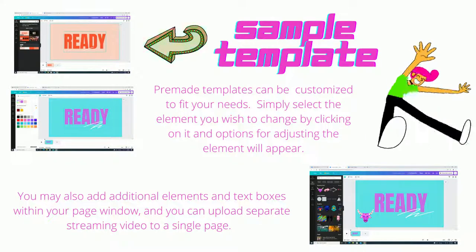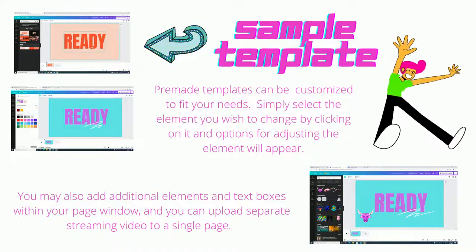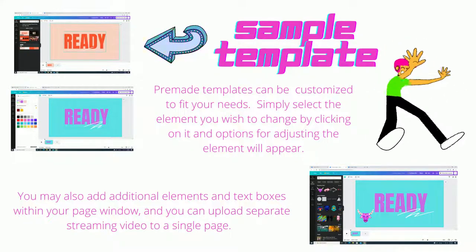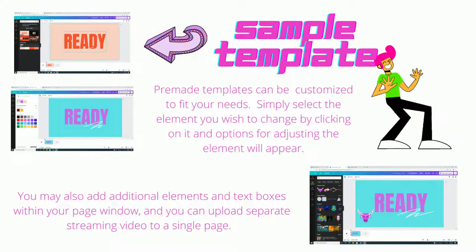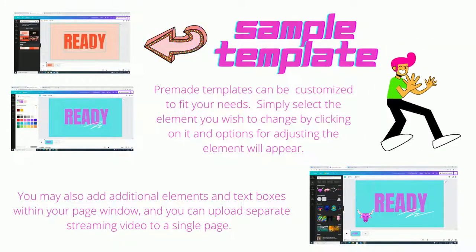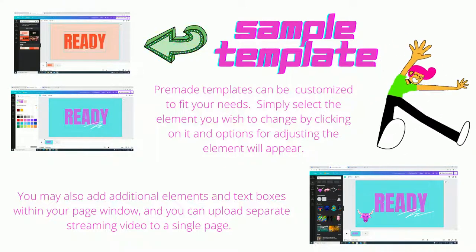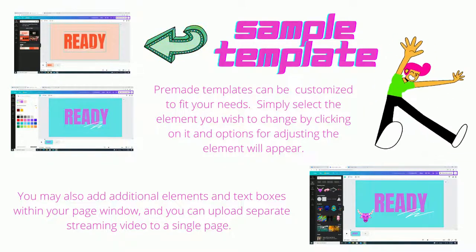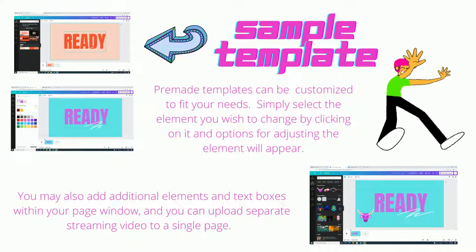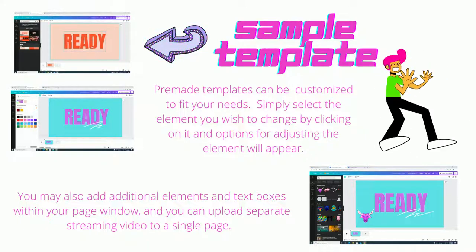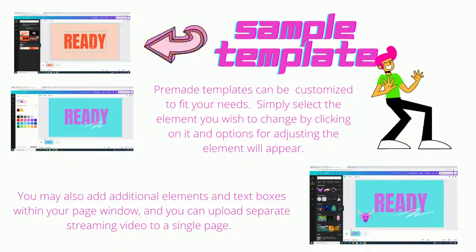Here are some sample templates as you can see. On those pre-made templates you are also able to customize them to fit your needs. Simply select an element on the page and you'll have options to change it — for text you can change colors or fonts. For background screens you can change the color and you can add elements to those screens.